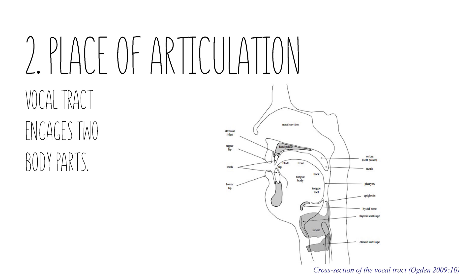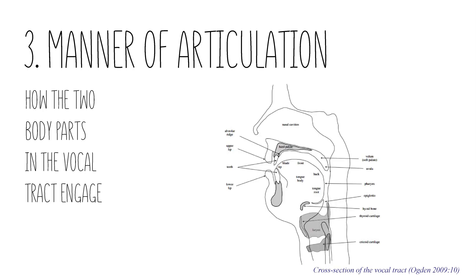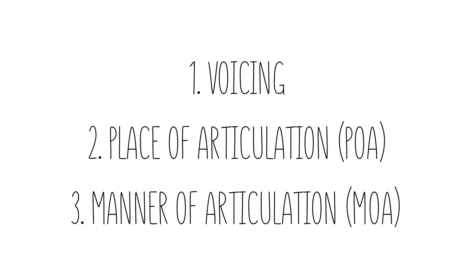The second feature is place of articulation — which part of your vocal tract should be engaged in the articulation process. More accurately, which parts, because you need two articulators involved, just like you need two fingers to snap. For every sound, two articulators get involved. The third feature is manner of articulation — how those articulators are engaged. So the three features are: voicing, place of articulation, and manner of articulation.